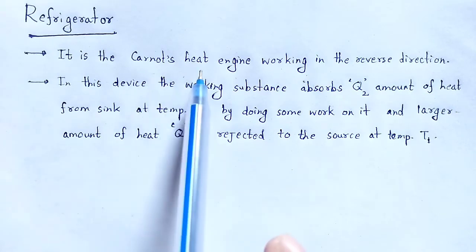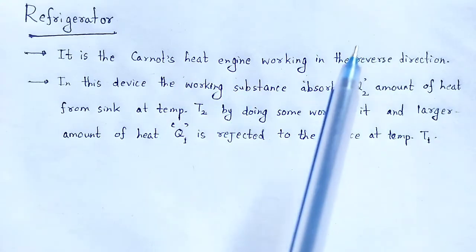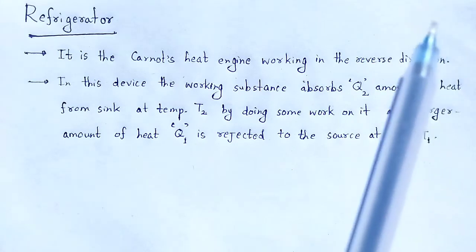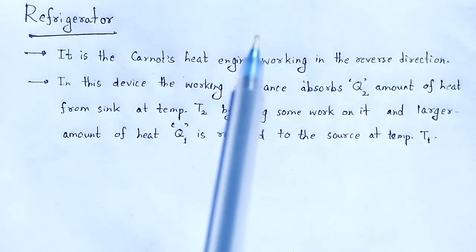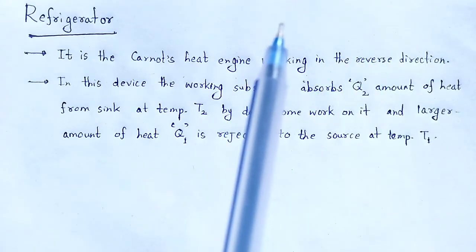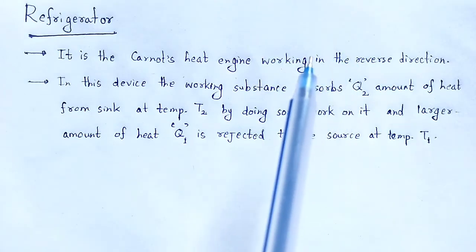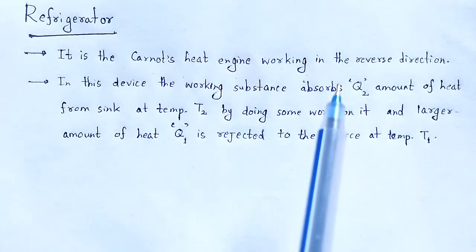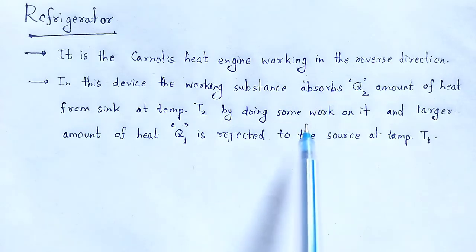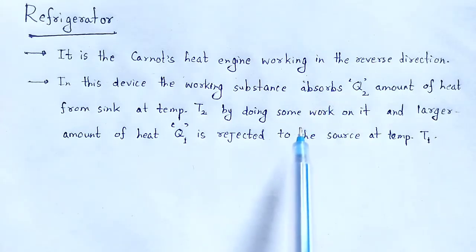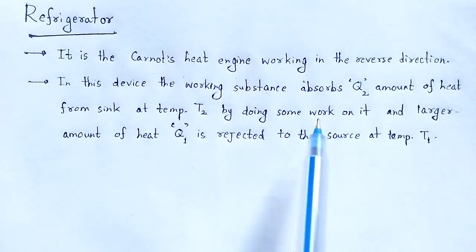In a Carnot engine, the source is at temperature T1 and the sink is at temperature T2, where the temperature of the source is greater than that of the sink, and work is done by the system. But in a refrigerator, work is done on the system.